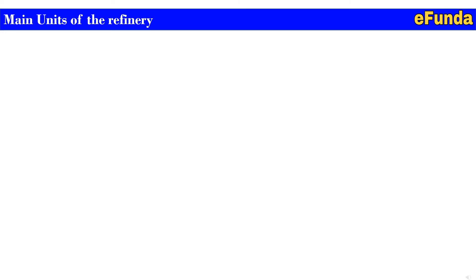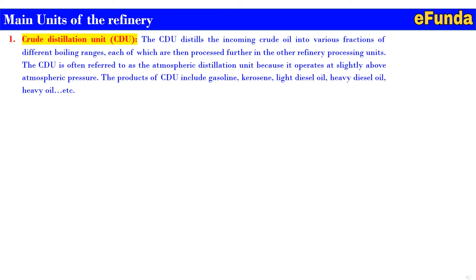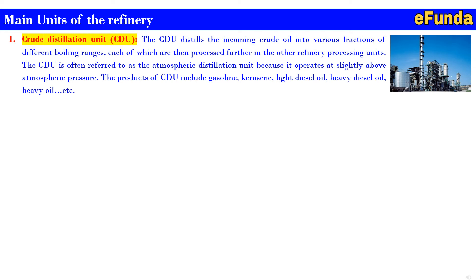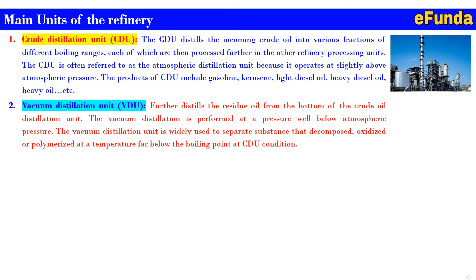Moving on to the main units of the refinery: first is the Crude Distillation Unit, or CDU. The CDU distills incoming crude oil into various fractions of different boiling ranges, each of which is then processed further in other refinery units. The CDU is often referred to as the Atmospheric Distillation Unit because it operates at slightly above atmospheric pressure. Products of the CDU include gasoline, kerosene, light diesel oil, heavy diesel oil, and heavy oil.